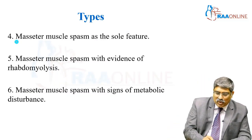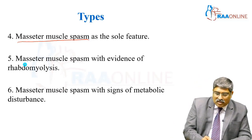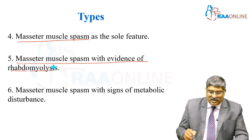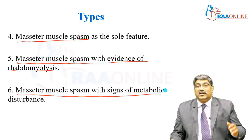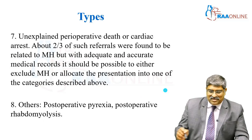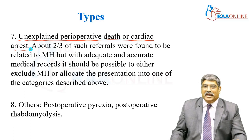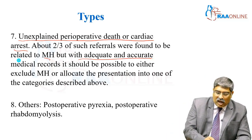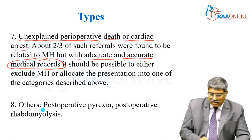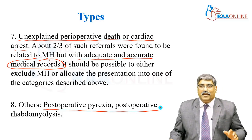Coming to other types: sometimes you have only masseter muscle spasm, or Type 5, which can be associated with rhabdomyolysis. In Type 6, this muscle spasm is associated with signs of metabolic disturbances. Type 7 is unexplained perioperative death or cardiac arrest attributed to malignant hyperthermia with adequate and accurate medical records. Other types include simple postoperative pyrexia or postoperative rhabdomyolysis.